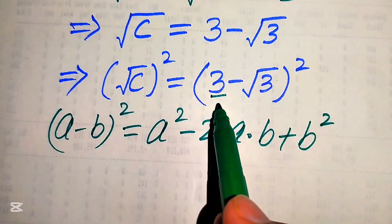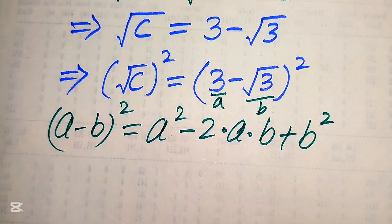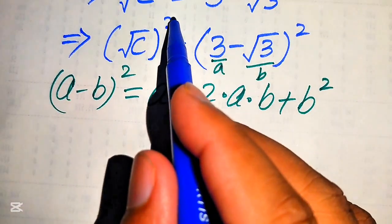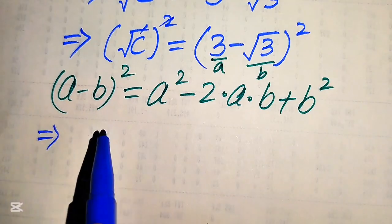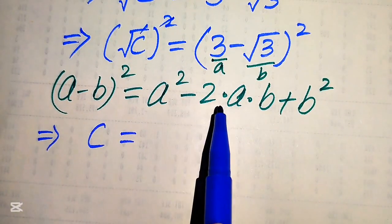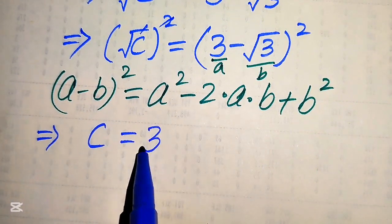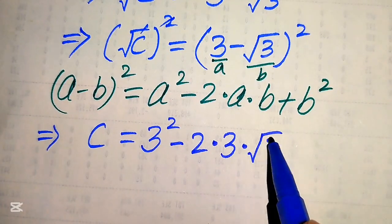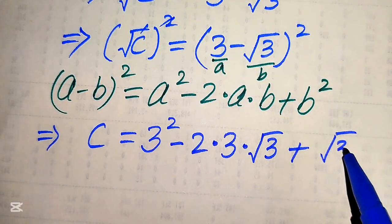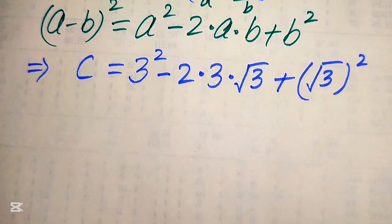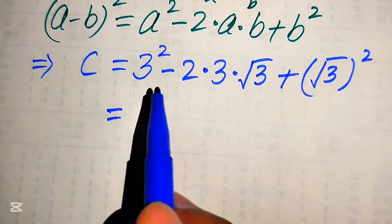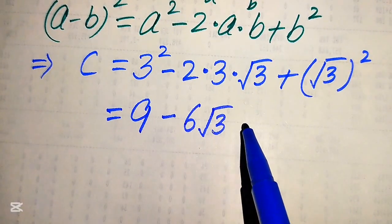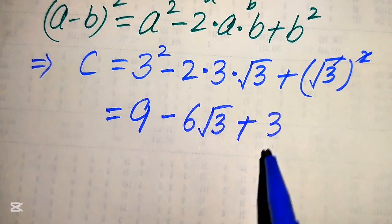Here the value of a is 3 and the value of b is square root of 3. We expand the right-hand side by applying this formula. On the left-hand side the square and square root cancel, giving us c equals a squared minus 2ab plus b squared, which is 3 squared minus 2 times 3 times square root of 3 plus (square root of 3) squared.